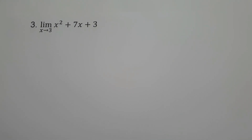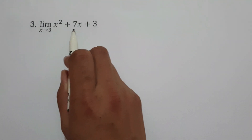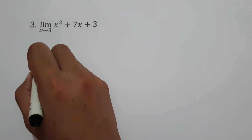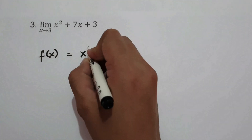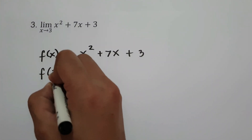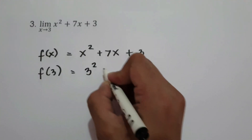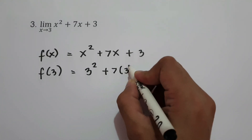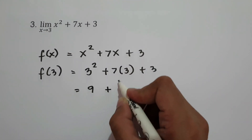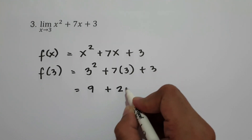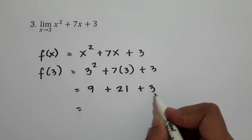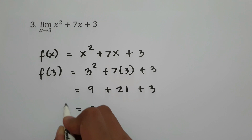On example number 3, we have the limit of x squared plus 7x plus 3 as x approaches 3. So f(3) = 3 squared plus 7 times 3 plus 3. That is 9 plus 21 plus 3, which equals 33. So 33 will be the value of the given limit.